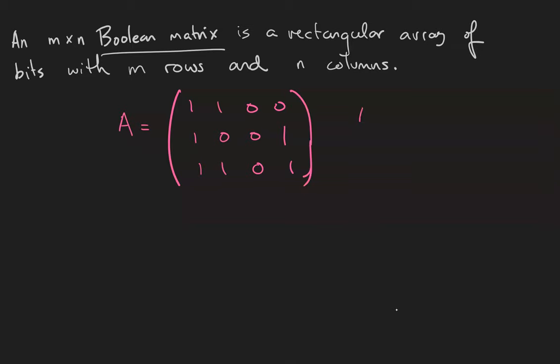Matrices are typically denoted with subscript ij to refer to the entry in the i-th row and j-th column. In this particular matrix, the entry in the second row and third column is a 0, while the entry in the third row and second column is a 1.